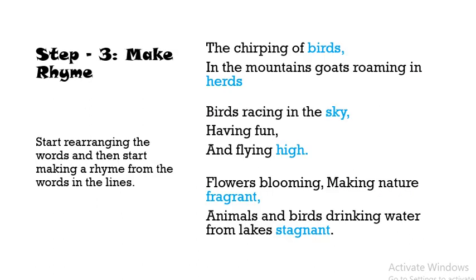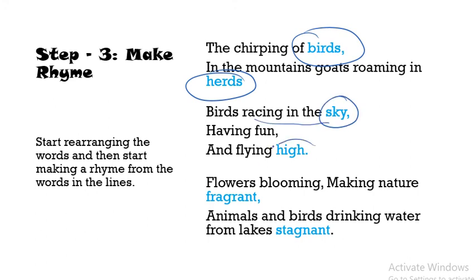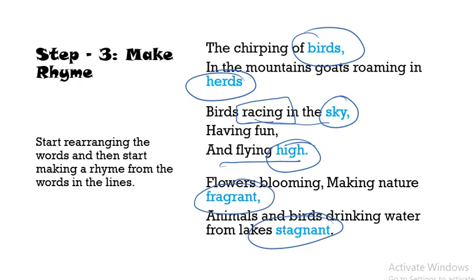Once you have written all the lines, the next step is to make a rhyme. There should be a rhyming scheme in your poem. For example, 'birds' and 'herds' is a rhyme. Knowing that birds rhymes with herds, I made the line 'in the mountains, goats roaming in herds.' Then the next rhyme was for 'sky' — 'birds racing in the sky' and 'having fun and flying high.' Then there is 'fragrant' and 'stagnant' — they are also rhyming. That way you complete the third step.